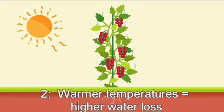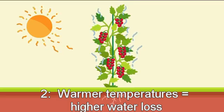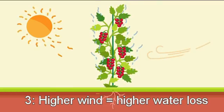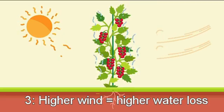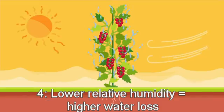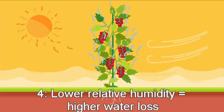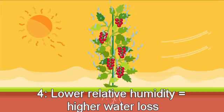Number two: when the air temperature starts to exceed 20°C, the plant will start to lose more water to cool itself. Number three: the amount of wind, since a higher wind speed will draw more dry air over the leaf surfaces, helping to draw water out of the leaves. And number four: the relative humidity, since it is easier for the leaves to lose water if the air surrounding the leaf has a low relative humidity, like in a desert.